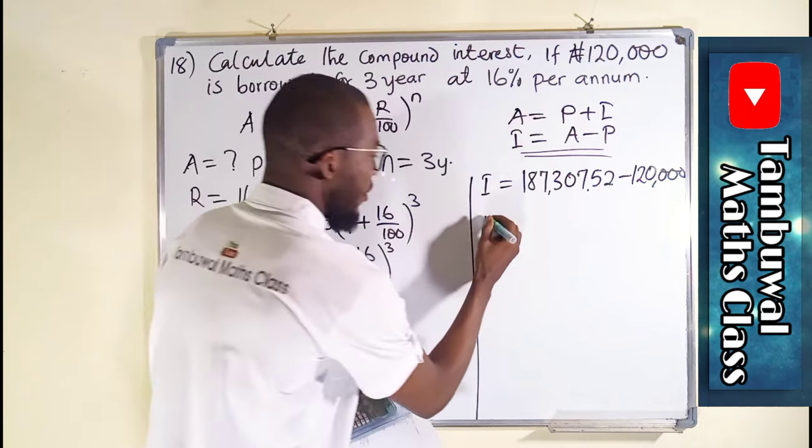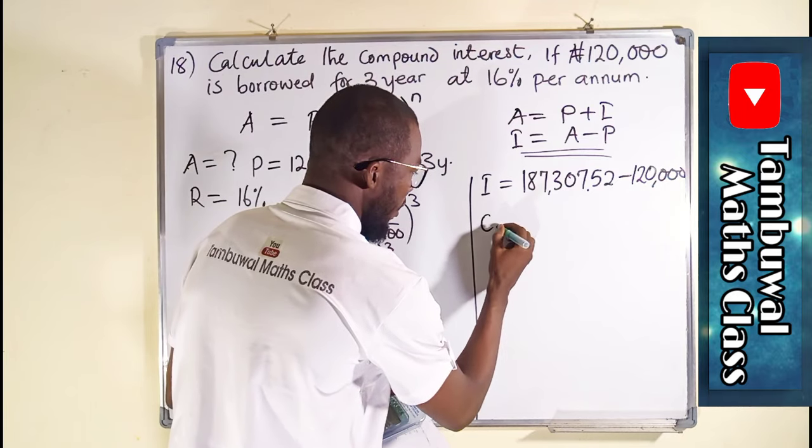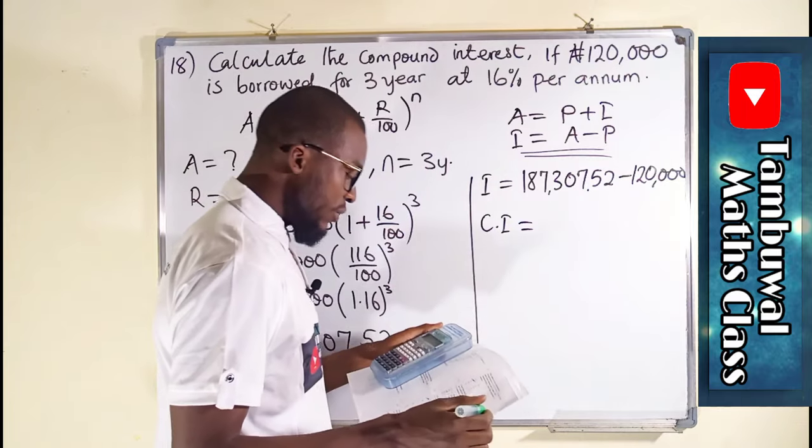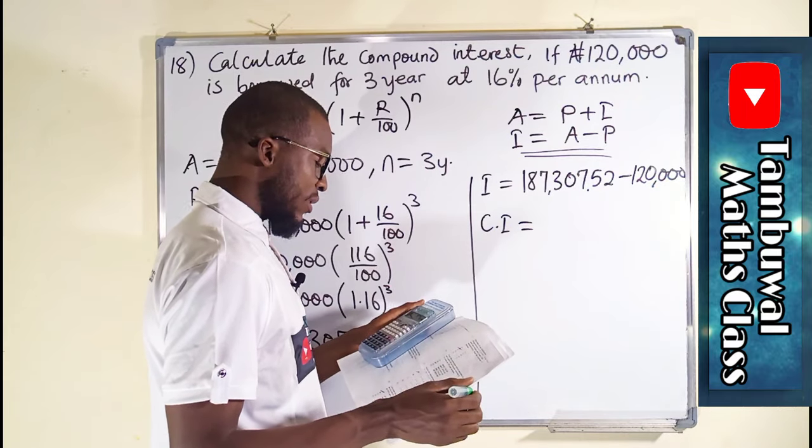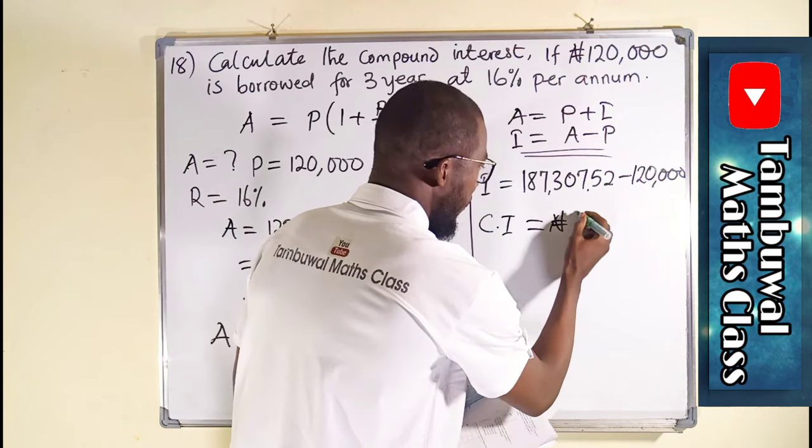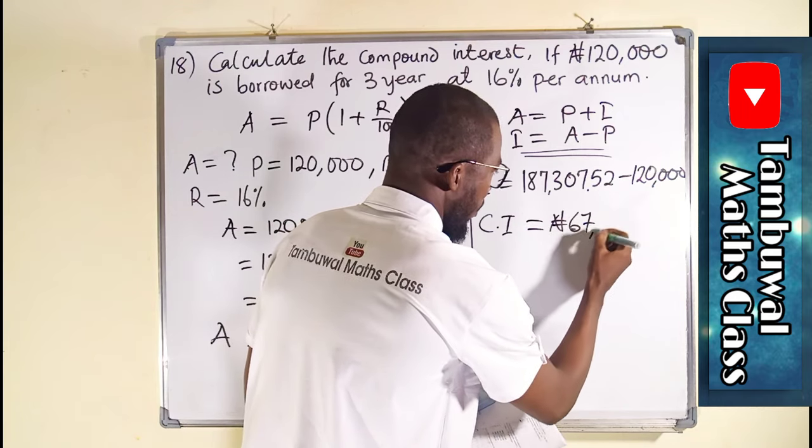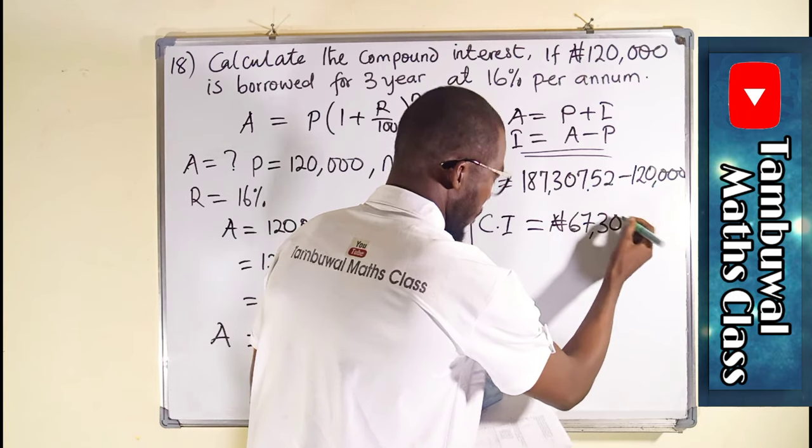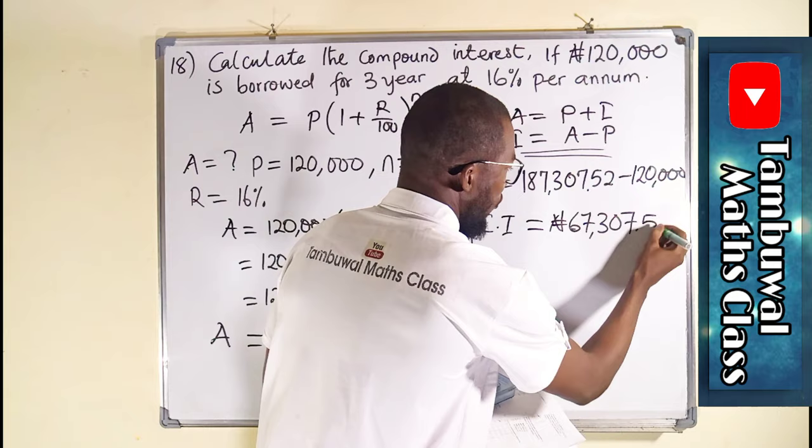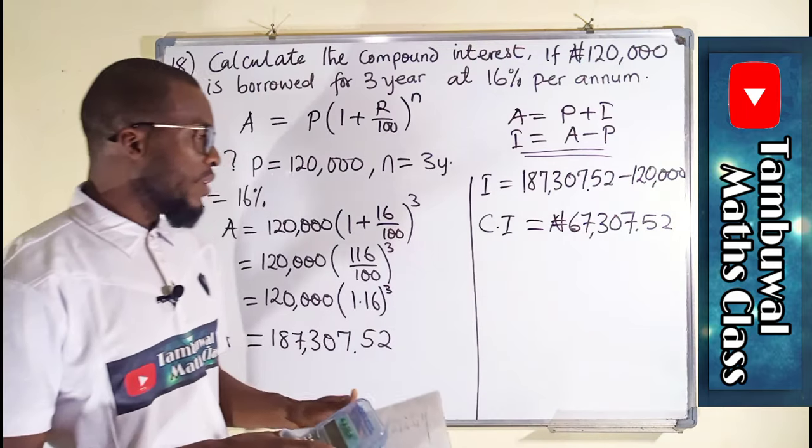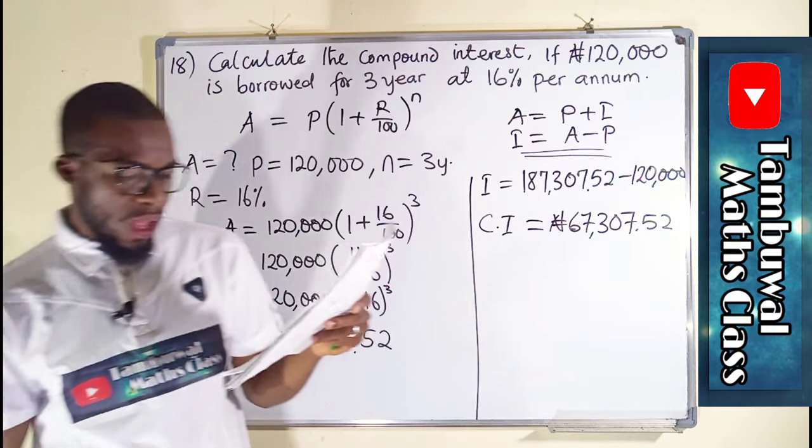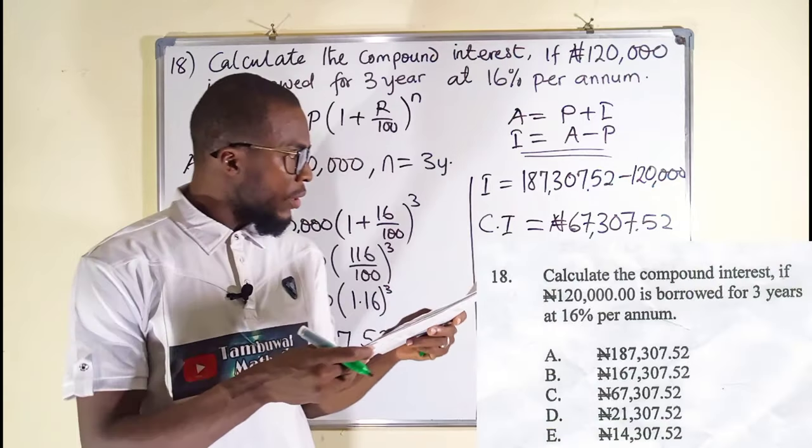And what we have as our interest, let me call it CI, compound interest, is equal to 67,307.52. So this is actually the compound interest we are looking for, and it is the option C here.